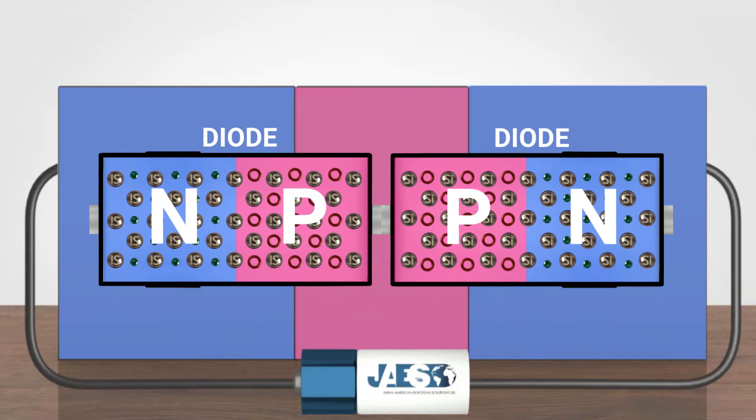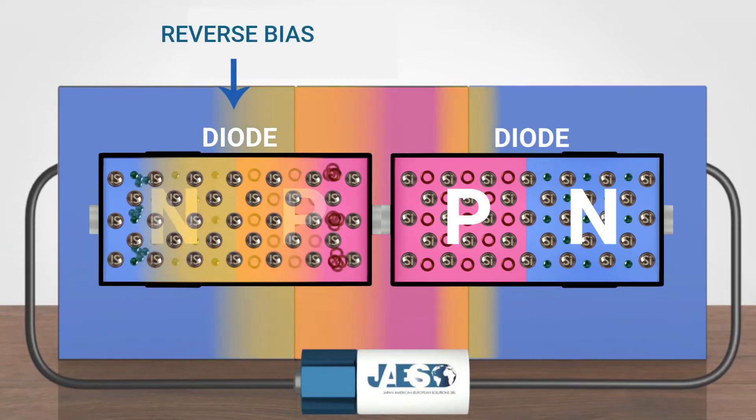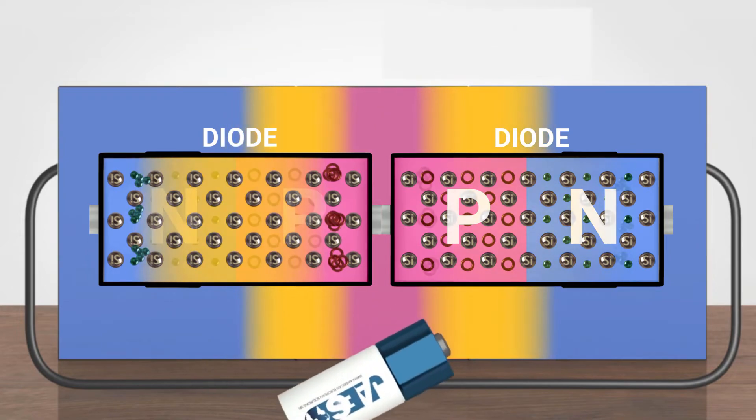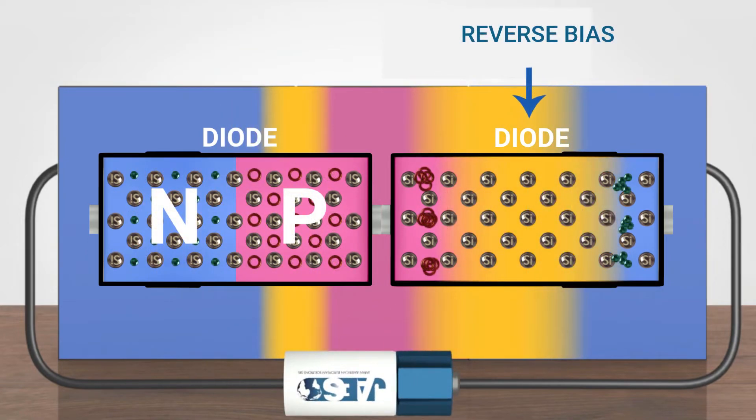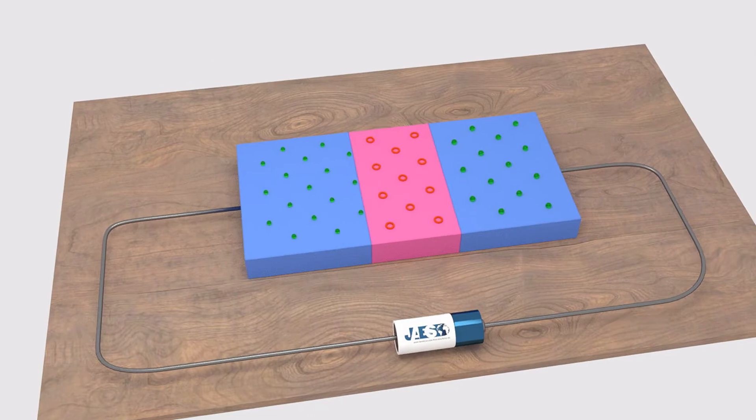So, in any way we connect the battery, one of the two diodes will always be in an inverse bias condition. By increasing its depletion region, one diode will always block the current flow. By blocking the current flow, the transistor is turned off.